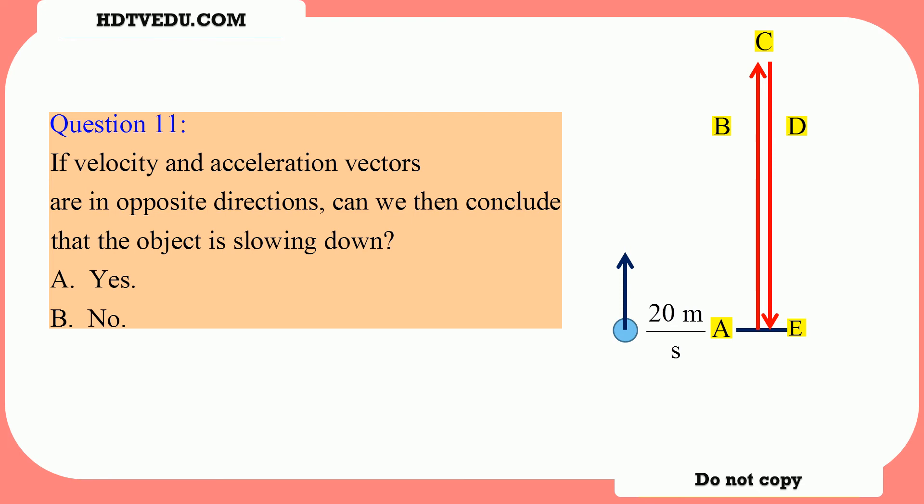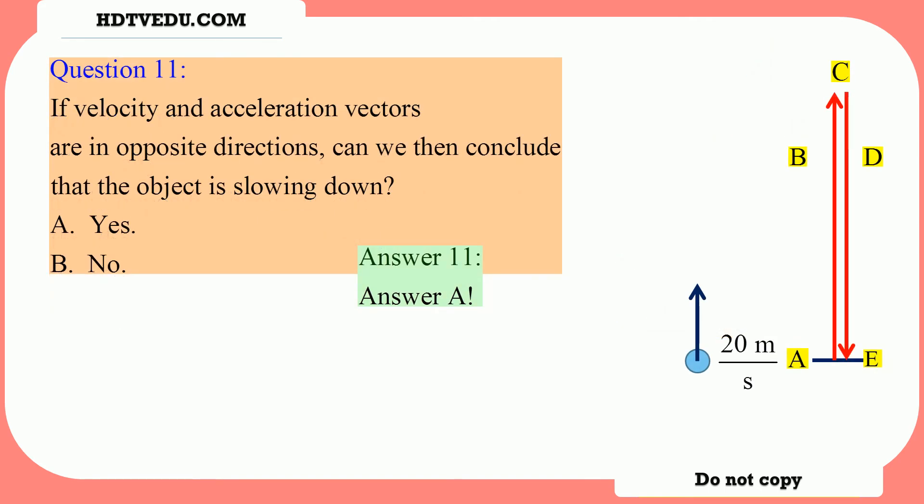Point A is 20 m/s. At point B it is 10. At point C it is 0. At point D it is negative 10. At point E, velocity is negative 20 meters per second. So the answer is yes — the object slows down if velocity and acceleration vectors are in opposite directions.